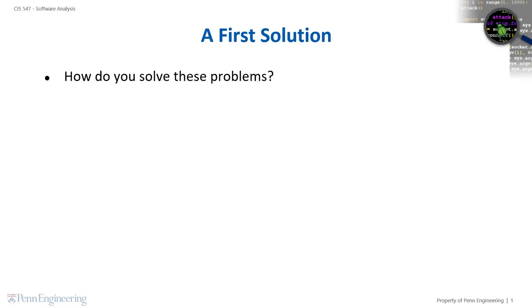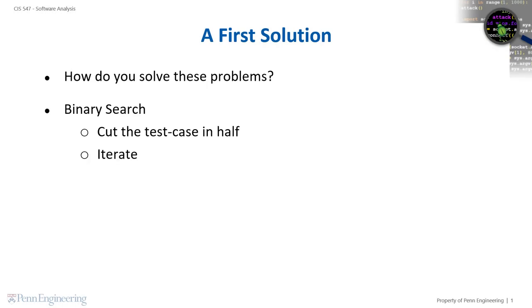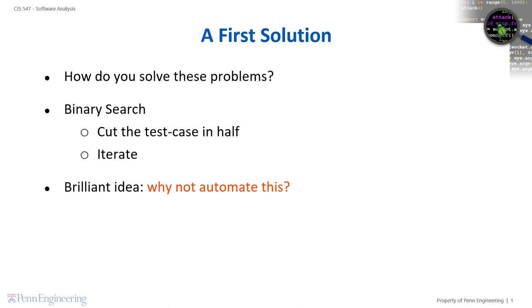What do we as humans do in order to minimize test cases? One possibility is that we might use a binary search, cutting the test case in two and testing each half of the input separately. We could even iterate this procedure to shrink the input as much as possible. Even better, binary search is a process that can be easily automated for large test cases.